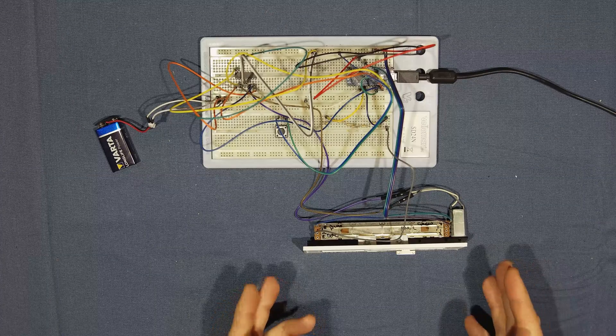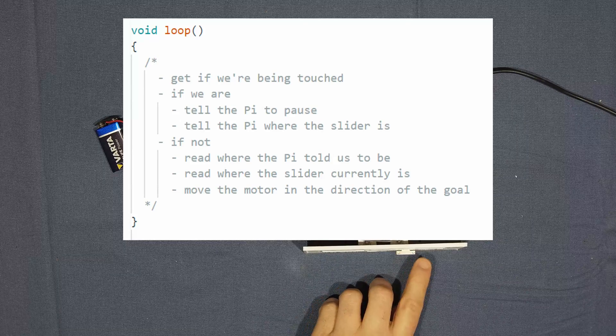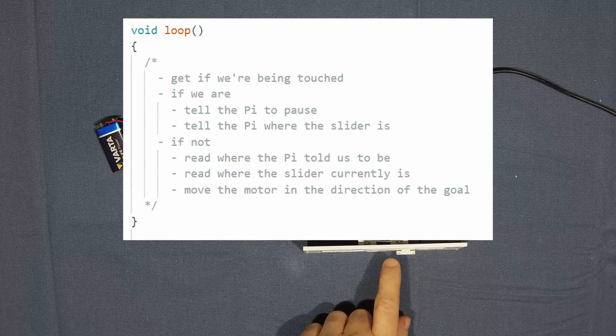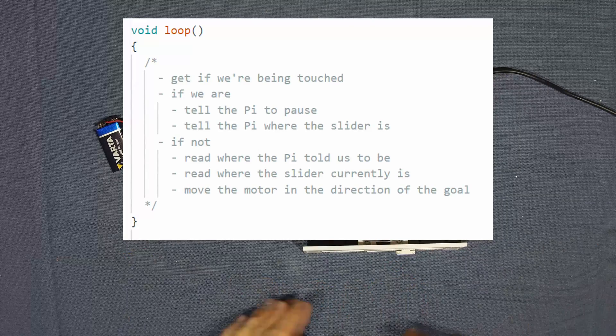So my code looked something like this. Check if we're touching, read where the slider is supposed to be, check where the potentiometer is, start the motor in the direction that it needs to go to get there, and then go back and loop.